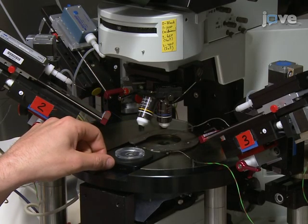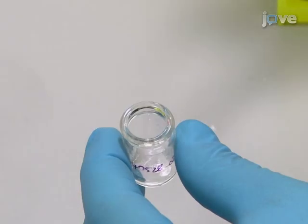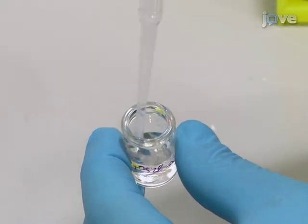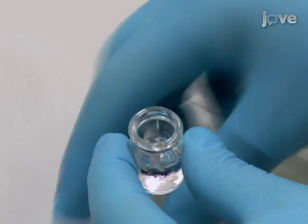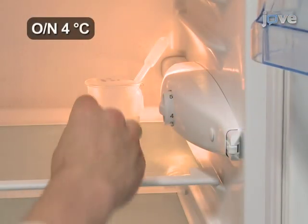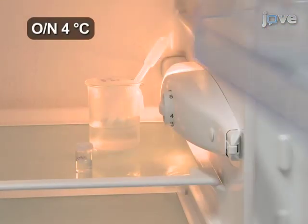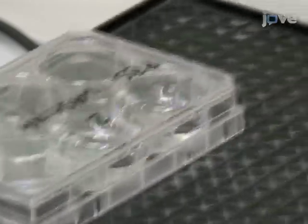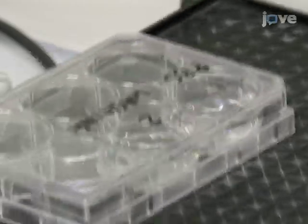Following the recordings, fix the slices by immersion in 4% paraformaldehyde with 0.1 molar phosphate buffer overnight at 4 degrees Celsius. Wash in phosphate buffer, then in phosphate buffered saline, and block with 10% normal goat serum, 0.03% triton X100, and 0.05% sodium azide for 1 hour at room temperature.